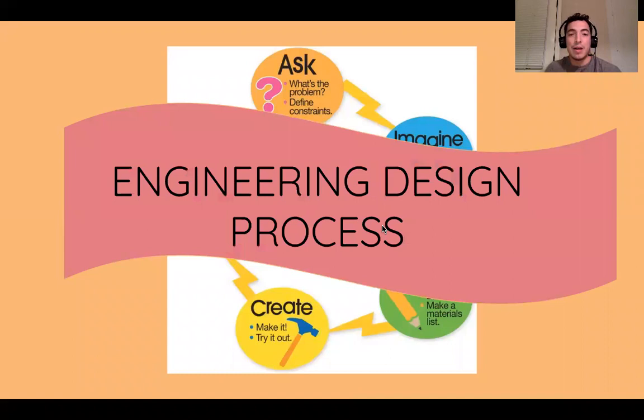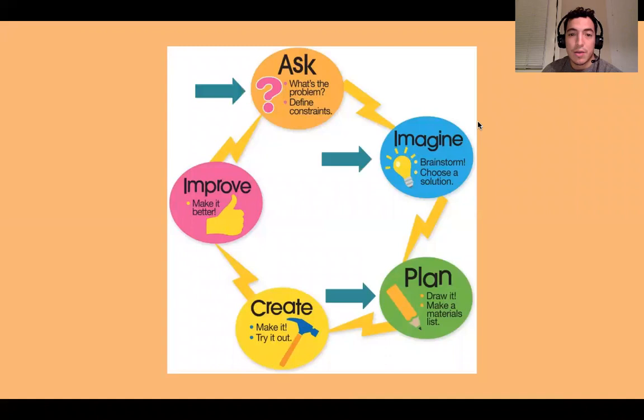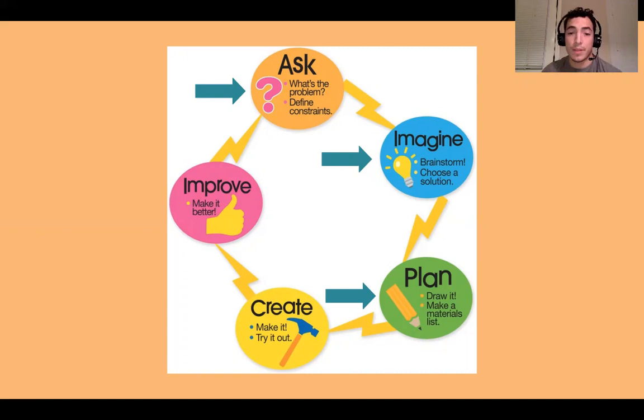So before we get started, this is our engineering design process. We've been using it the last couple of lessons for our engineering challenge — specifically our foil paper tower challenge. Last week, we basically dealt with our ask step, our imagine step, and our plan step. I introduced the prompt, the challenge itself. You brainstormed different ideas, and then you were able to plan it and draw it out. Shout out to y'all that did send in your designs — some were really intricate, really detailed, and had really good designs. Props to y'all, thank you for doing that.